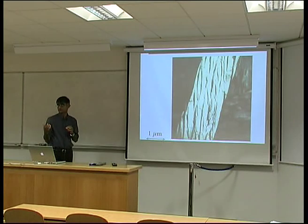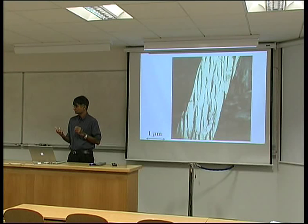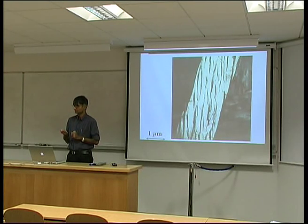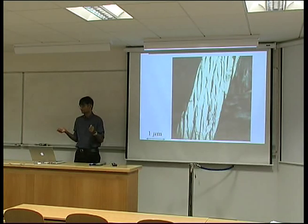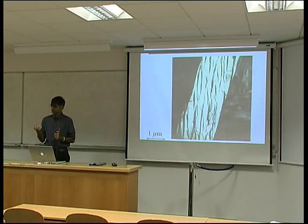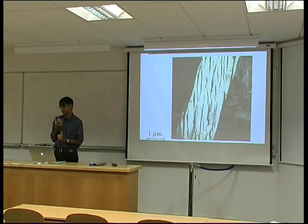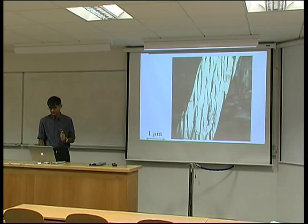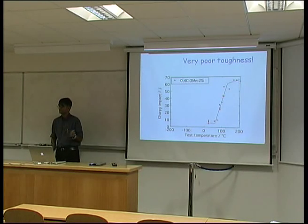Austenite has the property that it doesn't have a ductile-brittle transition temperature; austenite does not fail by cleavage. So we've got a nice composite microstructure on a very fine scale, and it should have wonderful strength and toughness. It turns out that it actually has very poor toughness.